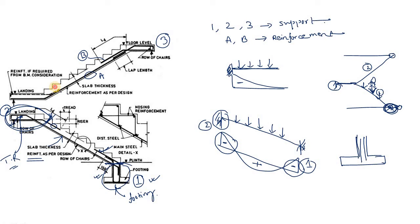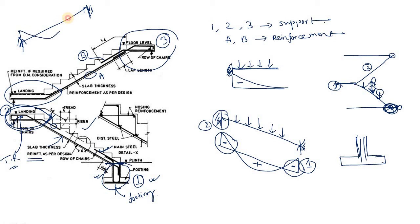Now for the second flight, the same logic applies. Here you can see one support at the mid-landing and another support at the top, and in between these two supports there is a beam — just like flight one. The bending moment diagram again shows positive bending moment in the span and negative bending moment at the supports. Due to the negative bending moment at the supports, reinforcement is provided at the top. This is shown in dotted lines in the drawing. It has also been noted that this reinforcement is required from bending moment consideration.